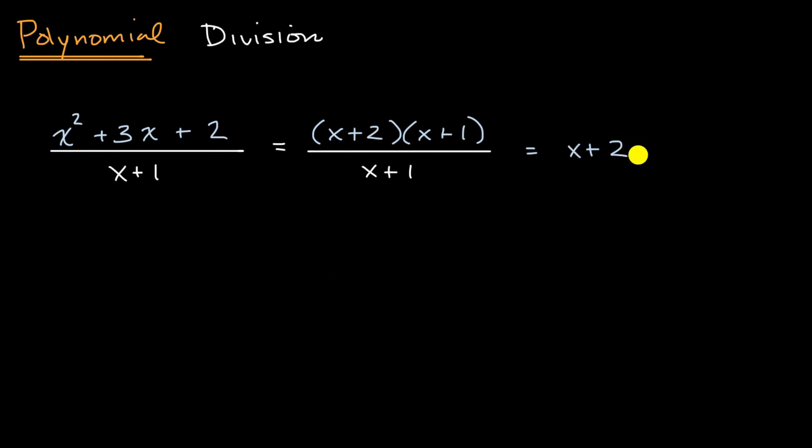And if we want to be really mathematically precise, we would say this would be true as long as x does not equal negative one, because if x equals negative one, we're going to be dividing by zero and that leads to all sorts of mathematical problems. But for any other x, as long as we're not dividing by zero, this expression is going to be the same thing as x plus two.